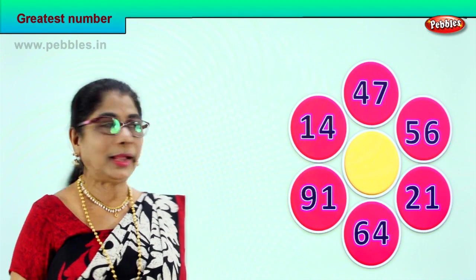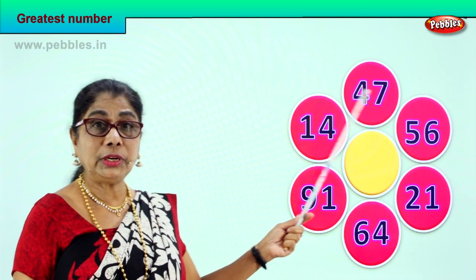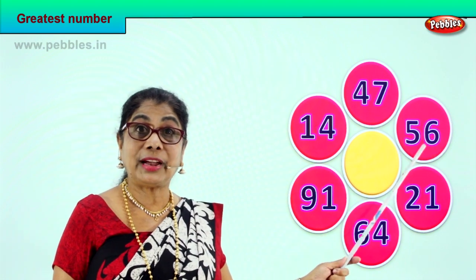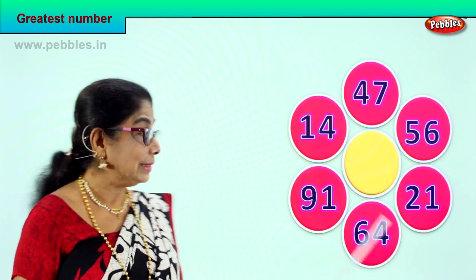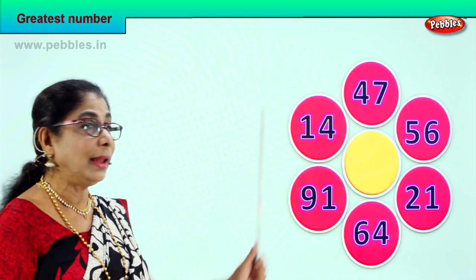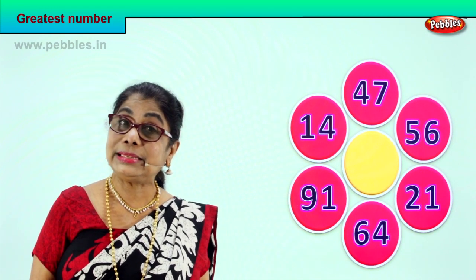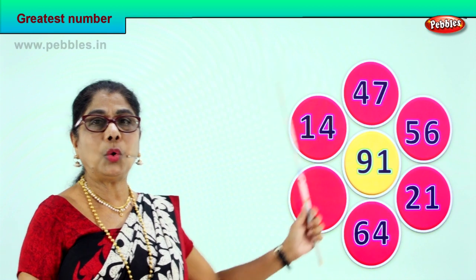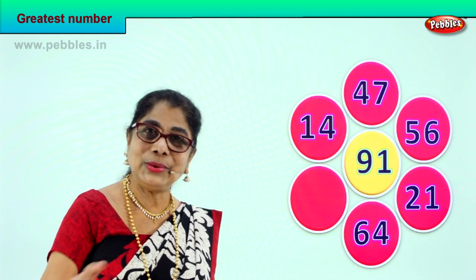Look at the numbers you have. 14: 1 ten, 4 ones. 47: 4 tens, 7 ones. 56 has 5 tens. 21 has 2 tens. 64 has 6 tens. And 91 has 9 tens. Among all the numbers, the number with the highest number of tens in the tens place is 91 — 9 tens and 1 one. Among all the numbers, 91 has the highest number of tens. Did you enjoy doing it?